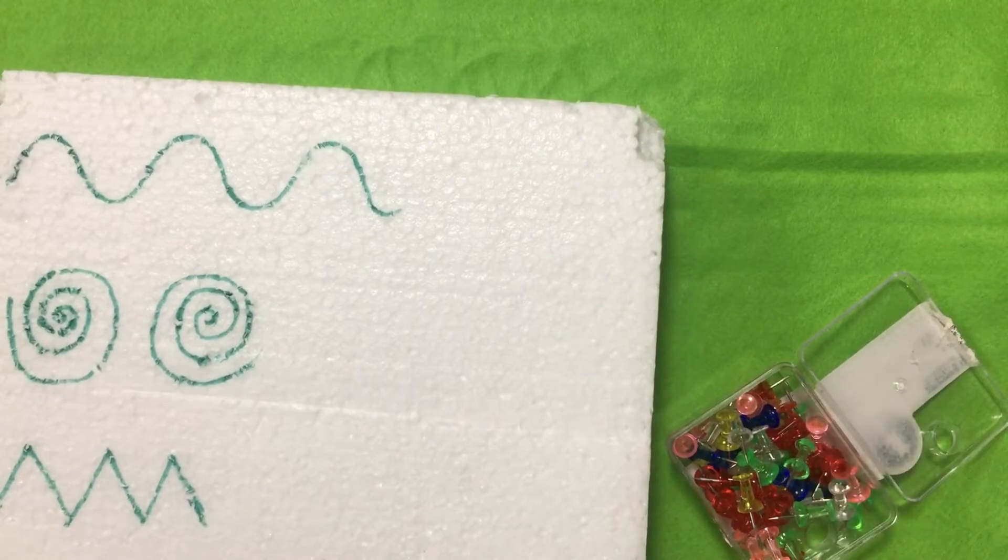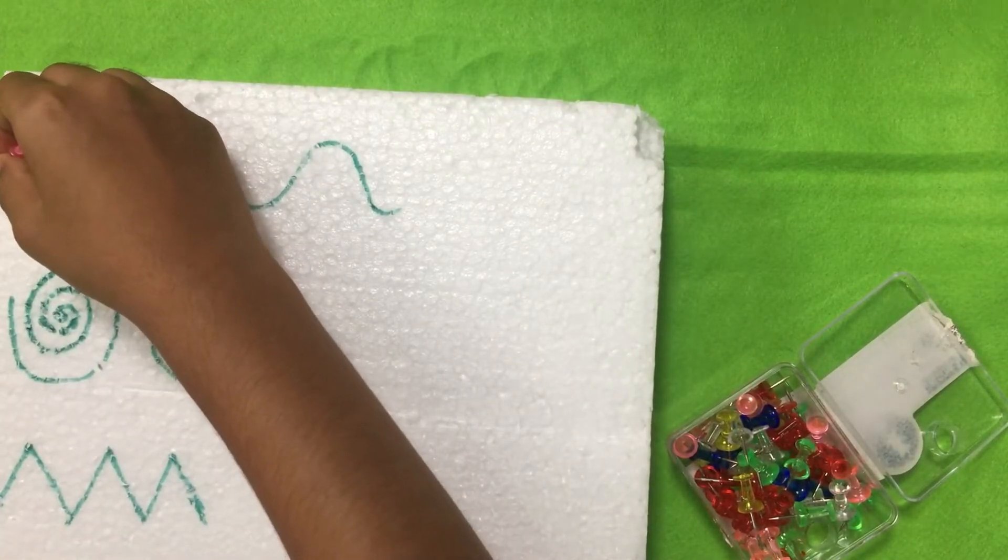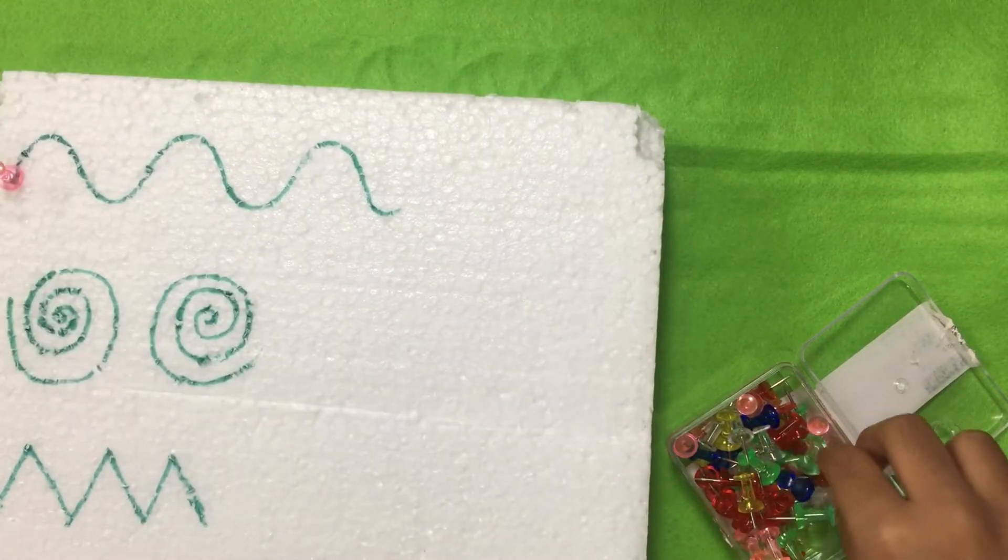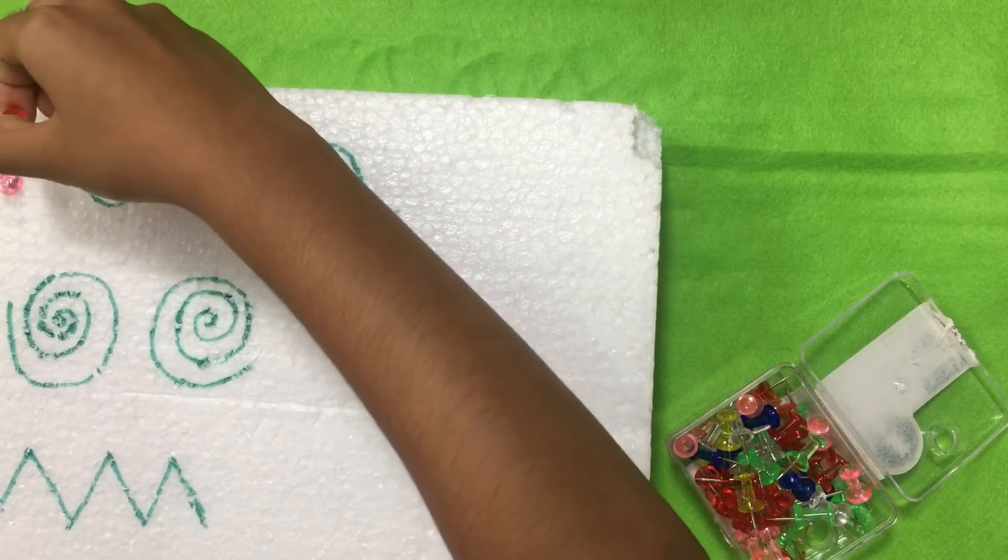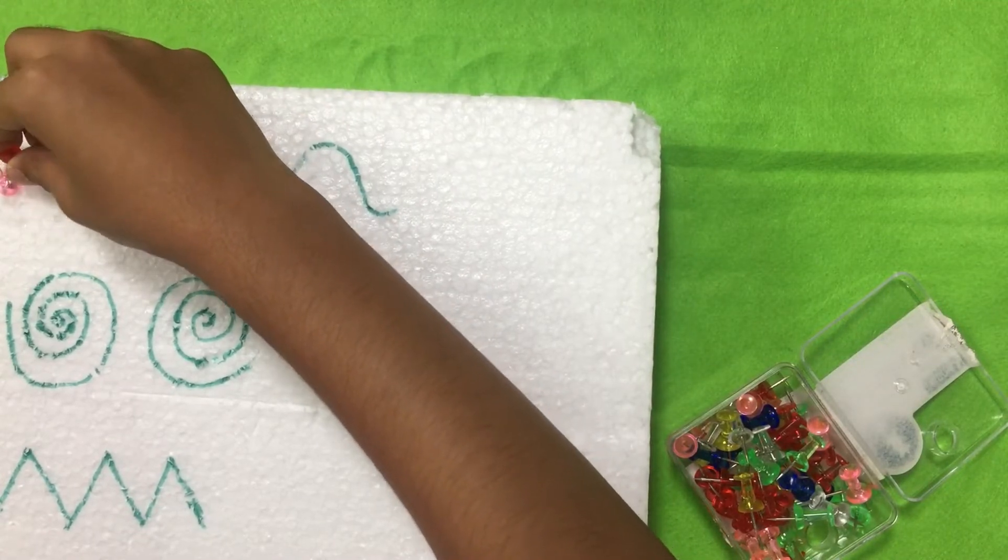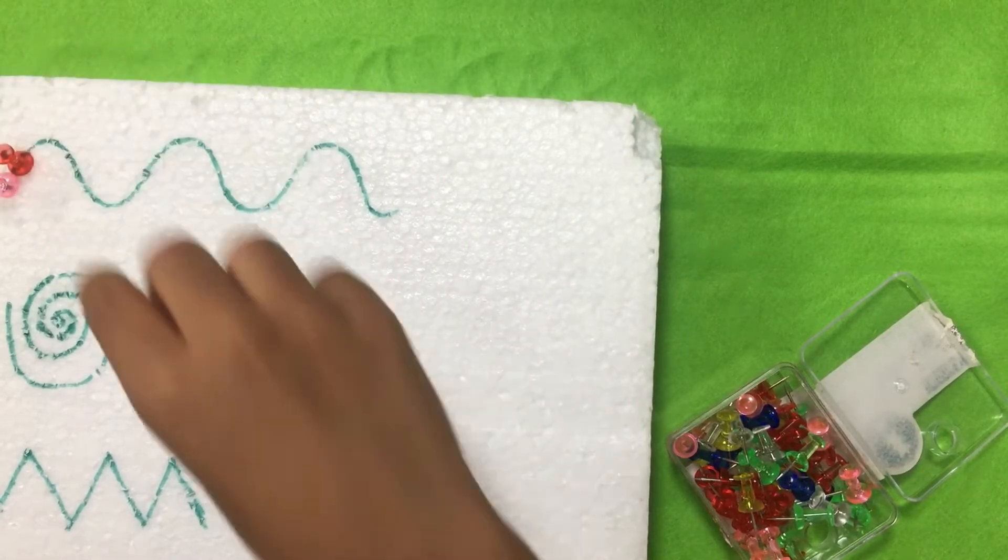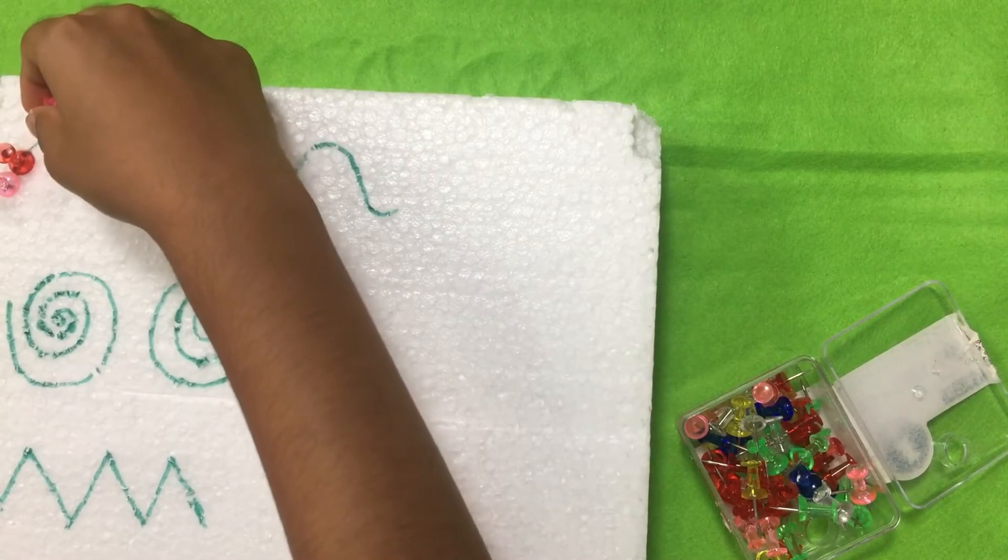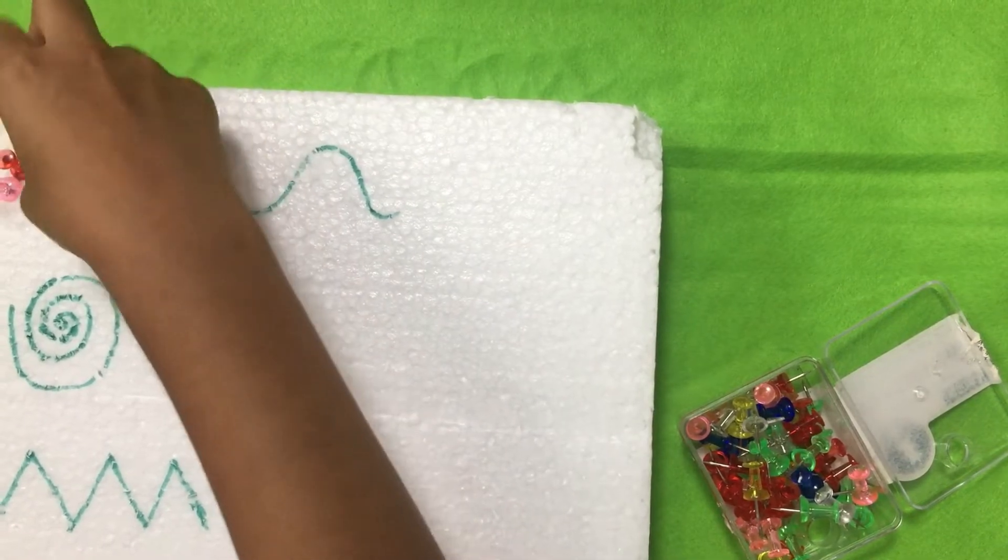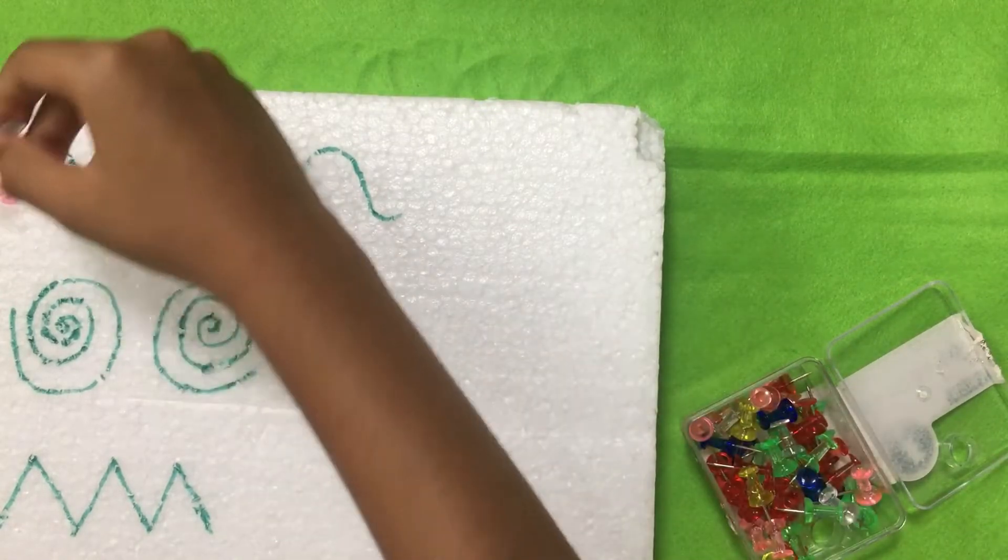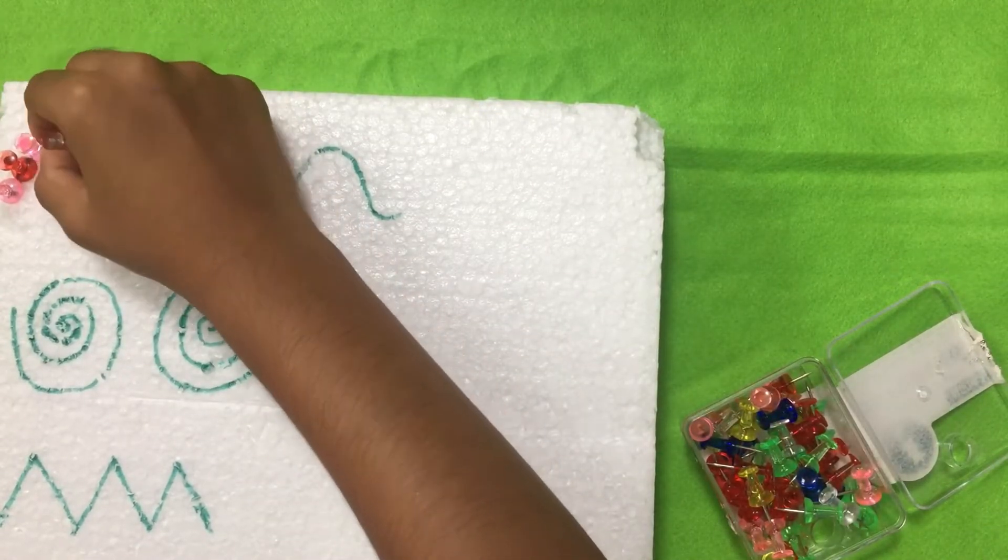This activity mainly helps with pencil grip, so it can be done by kids who are going to start writing or kids who have already started writing. It's a very nice and fun activity because they don't need to use pencils. In our case, Arav doesn't prefer to write all the time, so I end up finding ways to make him practice pre-writing in some fun form.